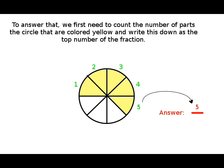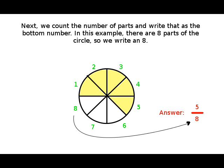As you can see, there are five parts that are shaded yellow, and we write this as the number on top of the fraction. Finally, we count the total number of parts into which the circle is divided. We can see that the circle is divided into eight parts, so we write that number as the bottom number of the fraction.